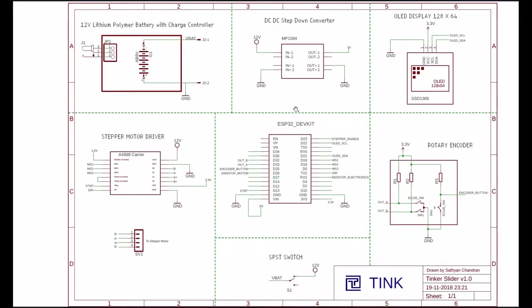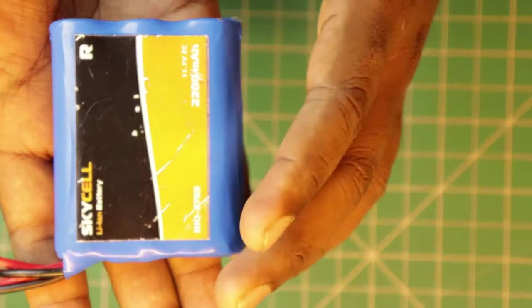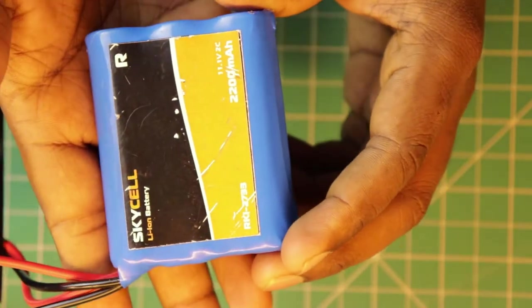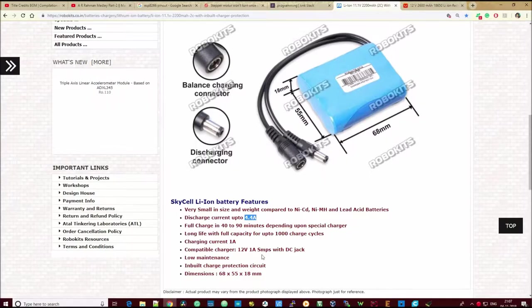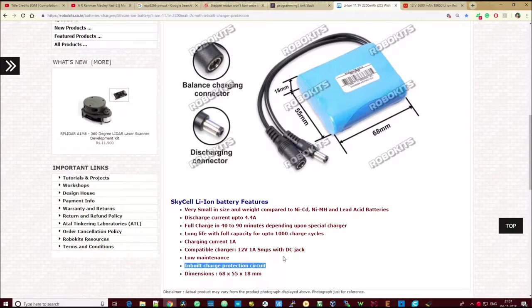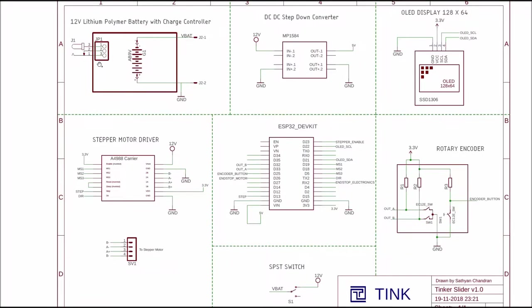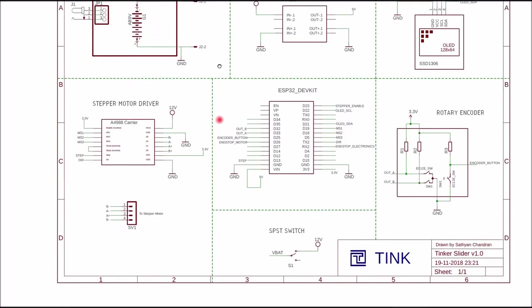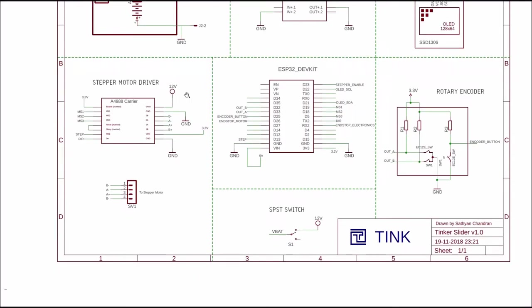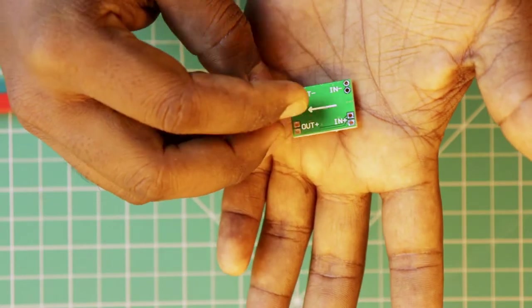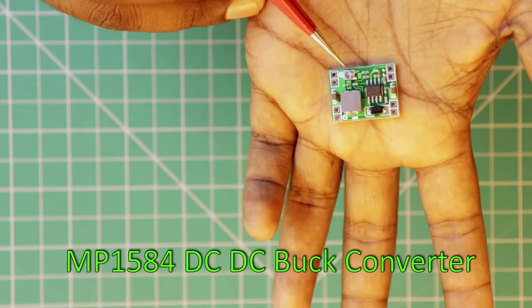We need 3.3 voltage for the microcontroller, OLED display and the encoder. But the stepper motor requires a voltage higher than 9V. So I am going to use a 11.1V lithium-ion battery that has 2200 mAh capacity. This battery pack has inbuilt protection and charging circuits. So we will use a 12V DC adapter to charge this battery directly through its DC jack. We can supply the battery voltage to the stepper motor directly using the stepper driver. But to step down the voltage for the rest of the circuits, we are going to use an MP1584 DC-DC step down converter module.